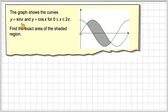The graph shows the curves y equals sin x and y equals cos x, for x between 0 and 2π. Find the exact area of the shaded region, which is this bit here.